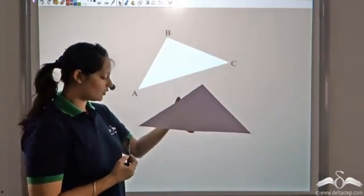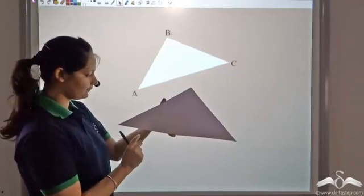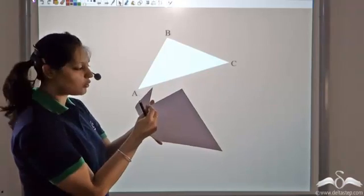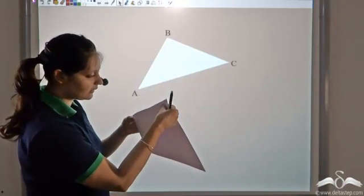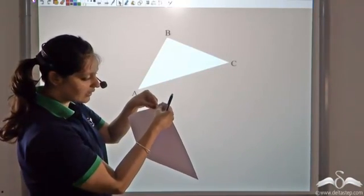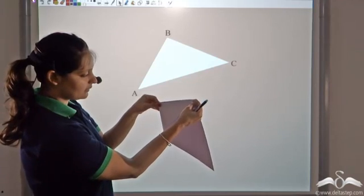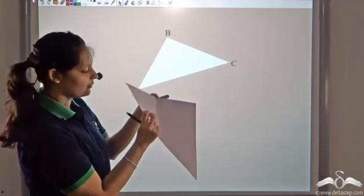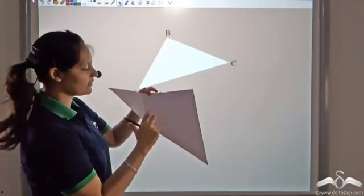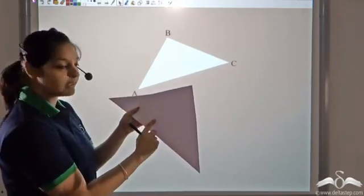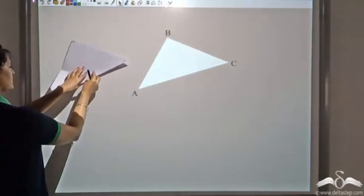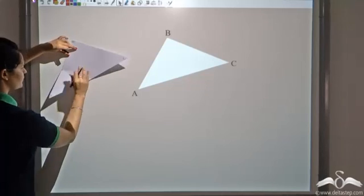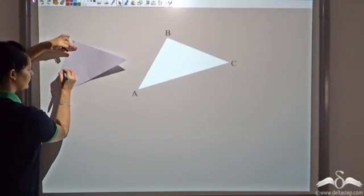Now let's find the midpoint of each of these sides. To find the midpoint of side AB, I'll overlap A to B. If I join these two vertices, this point gives me the midpoint of AB — this is equal to this. Let me call this point D.